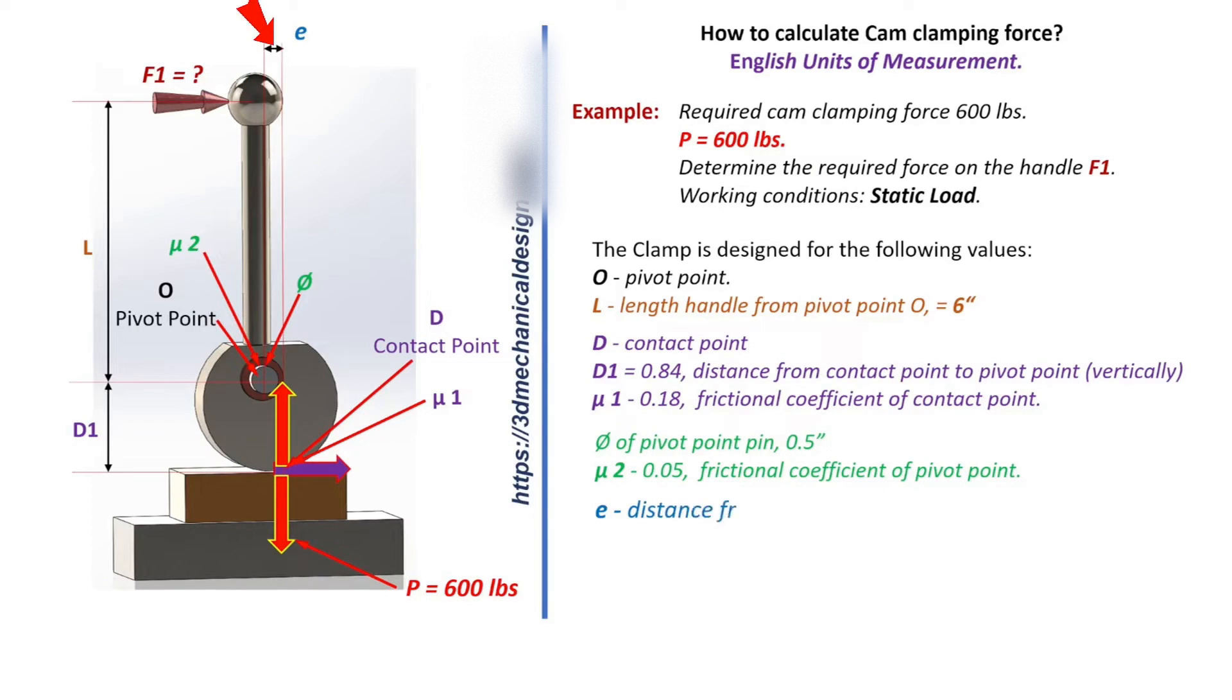E - distance from contact point to pivot point horizontally = 0.081 inch. P = 600 pounds, cam clamping force.